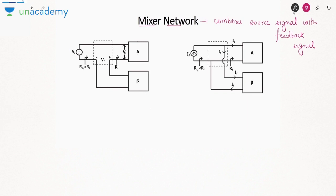When the signals are added it is positive feedback; when subtracted it is negative feedback. Effectively, when mixing two signals, either both signals are voltages or both are currents. So there are two possibilities: voltage mixing and current mixing.